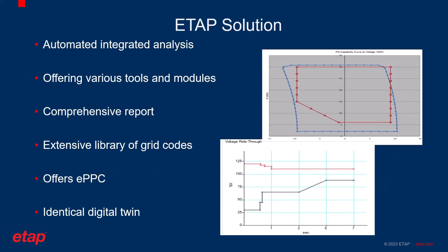In terms of the solution that ETAP proposes for grid code studies, the most remarkable key is the automation that has been done in ETAP for grid code analysis. It removes all the manual work and calculations, prevents all the potential manual mistakes that could be introduced, and does everything automated and integrated — conducting both time domain load flow analysis and transient stability analysis in an automated manner.